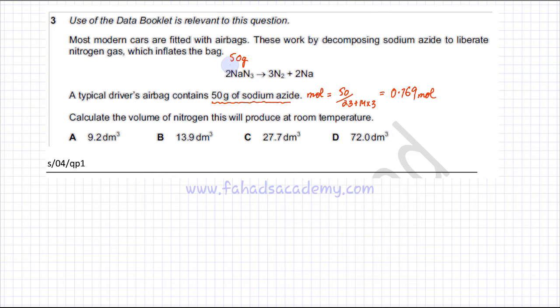That information is known. I'm going to write down the moles of sodium azide. It's 0.769 moles. That information is now with us. And he's asked you to calculate the volume of nitrogen gas this will produce.